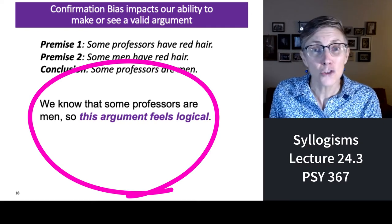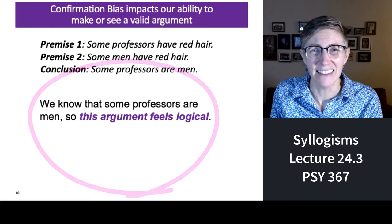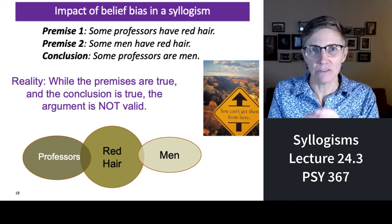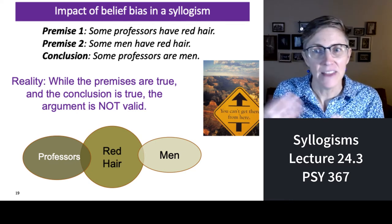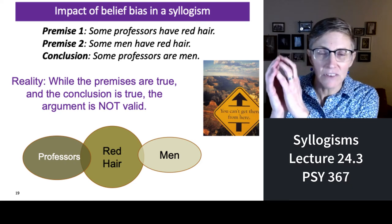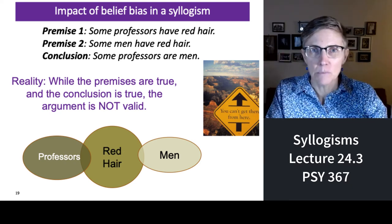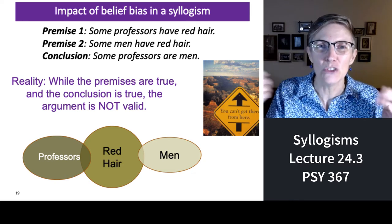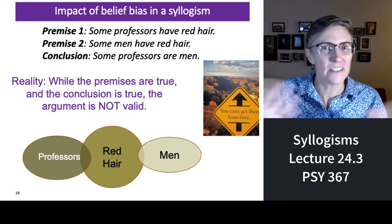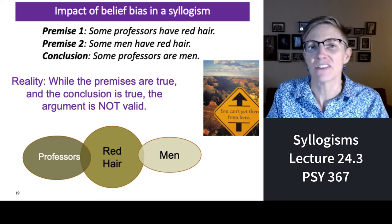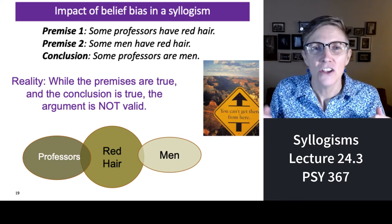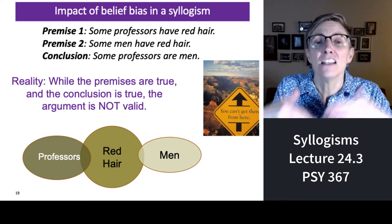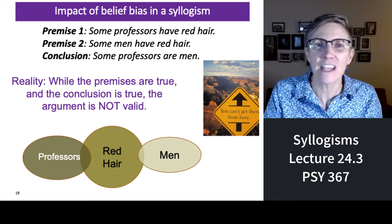We know the conclusion is true, so the argument seems valid. But why is this conclusion invalid? Well, if we've got red hair in the middle — some professors have red hair, some men have red hair — the circles of men and professors are totally separate. They do not overlap. So you cannot conclude that some professors are men just because some professors and some men both have red hair. You've got the premises, but the conclusion is invalid. The logic is invalid. You can't get there from here.